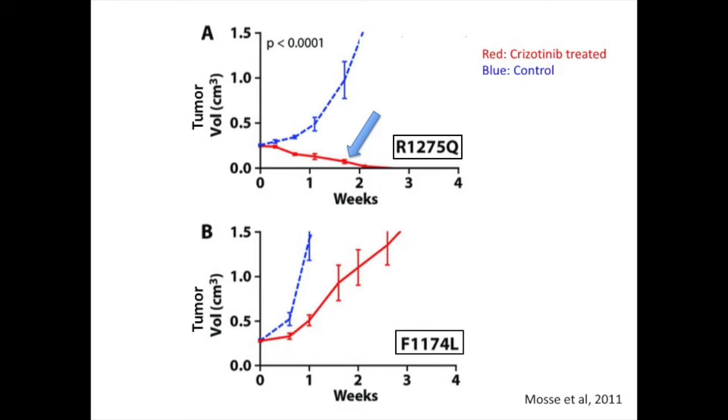In contrast, crizotinib delayed but didn't prevent tumor growth in mice with the phenylalanine-1174 to leucine mutations. This illustrates that crizotinib has a higher affinity for the arginine mutation than for the phenylalanine mutation. This is due to the phenylalanine mutation's increased affinity for ATP, which competes with crizotinib for the binding site.